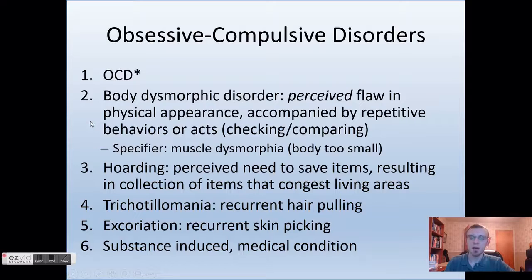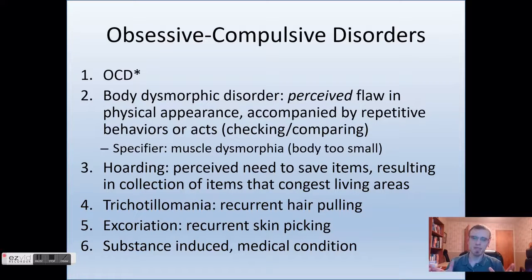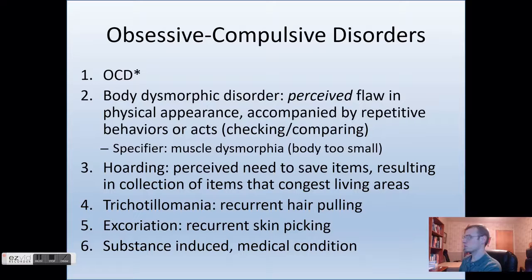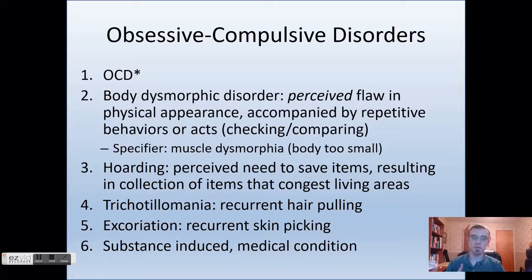First off is body dysmorphic disorder, which is another type of obsessive compulsive disorder. The one thing that these all have in common is that they all have some sort of obsessive thought that is difficult to alleviate, and there should be some kind of recurring compulsive behavior as well. So they all fall in line with that same idea of having one or both of an obsessive thought and some compulsive behavior in response to it.